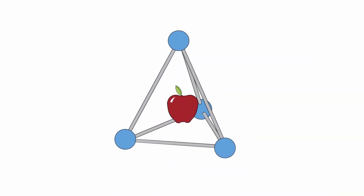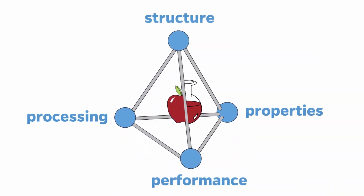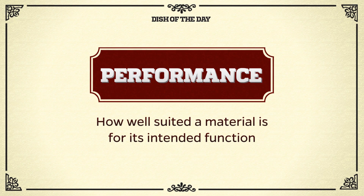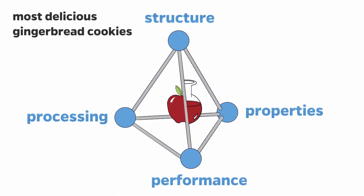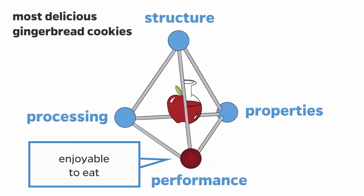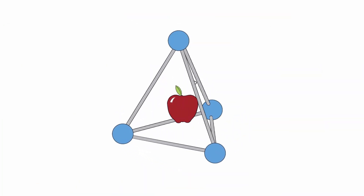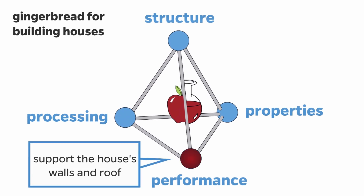Let's take a look at the material science tetrahedron. The tetrahedron shows the relationship between the four pillars of material science: structure, processing, properties, and performance. Performance refers to how well suited a material is for its intended function. The intended performance for the most delicious gingerbread cookies ever is to be enjoyable to eat, so the targeted properties will be things like being well spiced, soft, and fluffy. By contrast, the intended performance of gingerbread cookies for building houses is to perform well as the walls and roof of a house, not to taste the best.